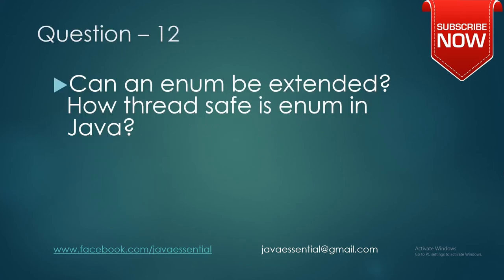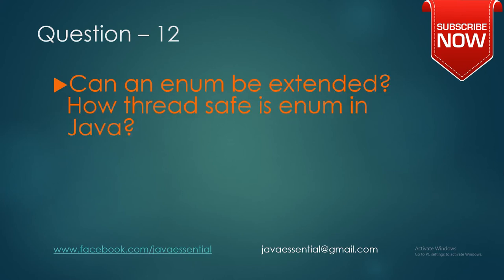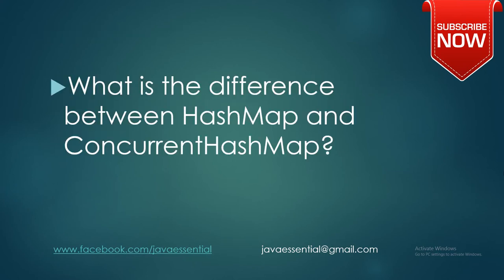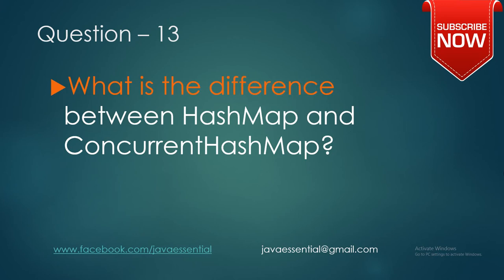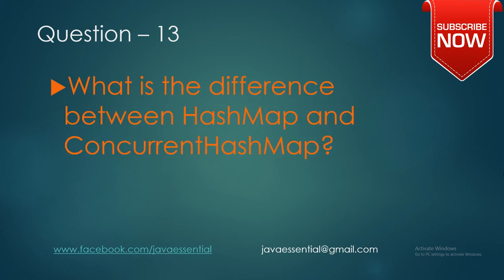Question number twelve is: can an enum be extended, and how thread-safe is enum in Java? Question number thirteen is: what is the difference between HashMap and ConcurrentHashMap? You should have a basic idea about HashMap.